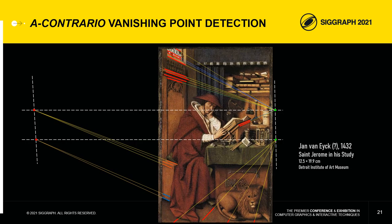This painting is interesting because its attribution to Van Eyck is still uncertain. Here we have two horizon lines, each with two vanishing points corresponding to the same directions in space. This should, in my opinion, dispel doubts about the attribution of this painting to Jan van Eyck.